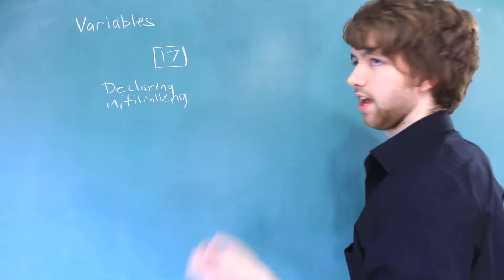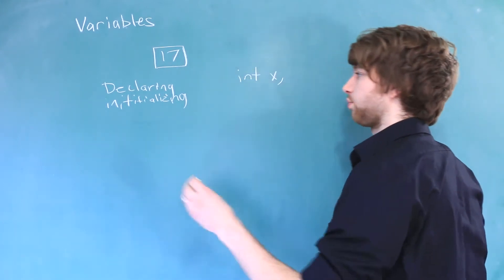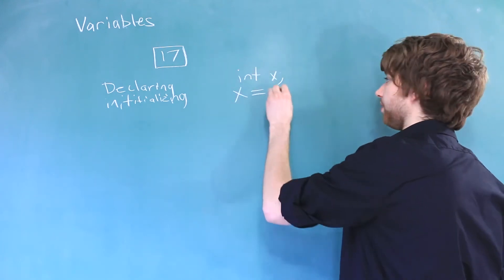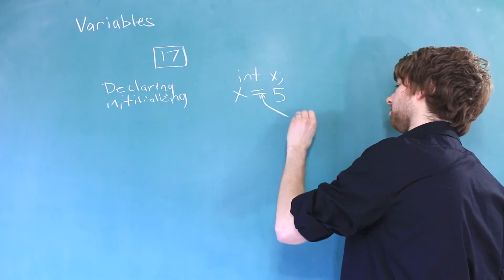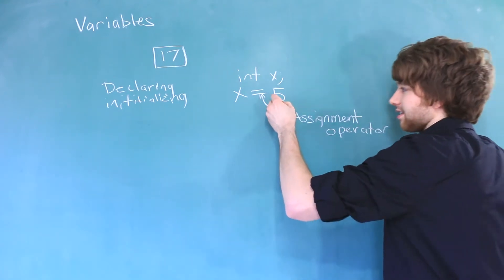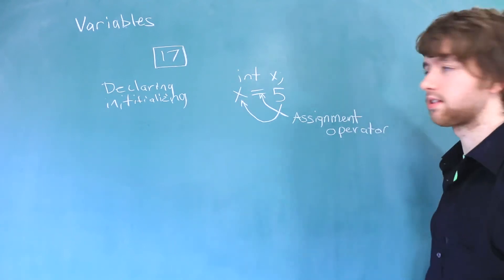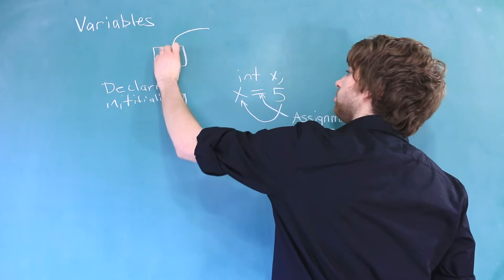Declaring is when you say, hey, this variable exists, such as this. Initializing is when we assign a value to that variable using x equals something. This here is known as the assignment operator. So you can literally think of it as assigning the value 5 to the variable x. That would be the equivalent of putting a value into the box.